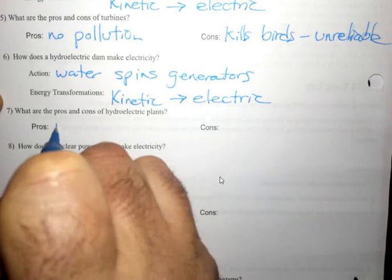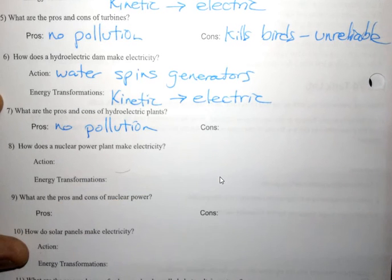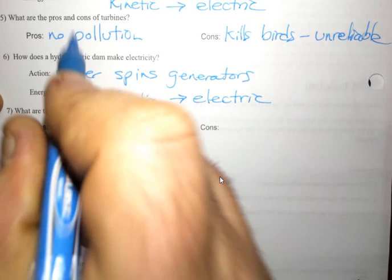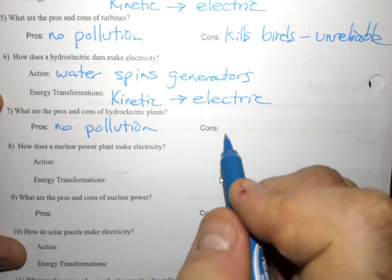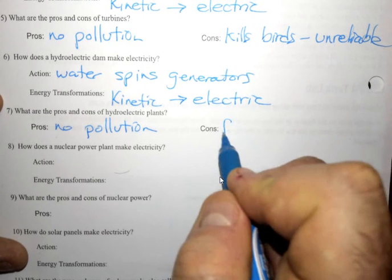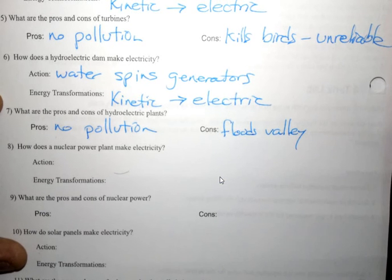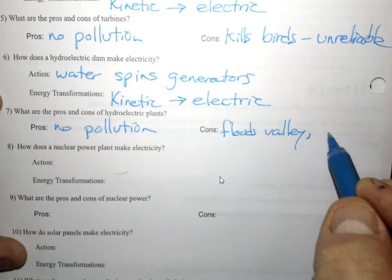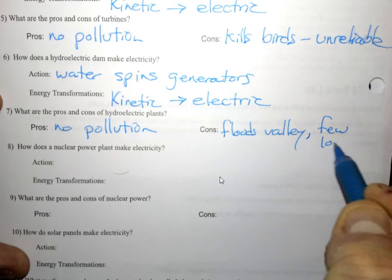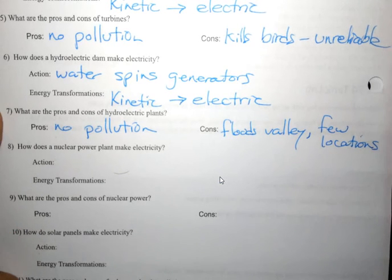Pros: no pollution, no fuel. I guess no fuel for these other things, too. Cons: let's see here, what should we say? It floods a valley. Butterflies and squirrels can't live there no more. And there are few locations. You have to have a river in a valley. You can't build it on flat ground. You have to have rivers around, obviously.